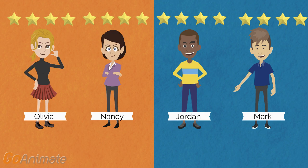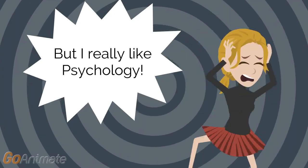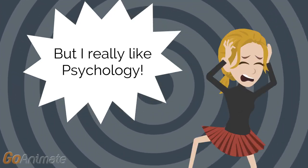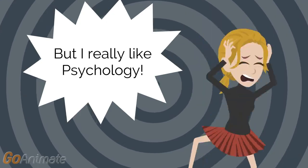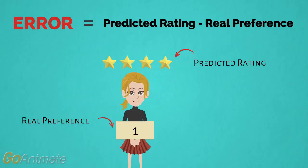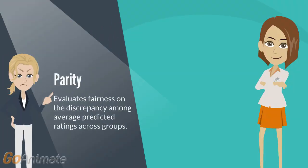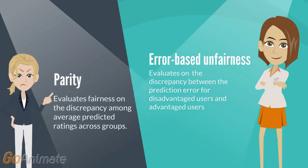For example, Olivia may be recommended computer science classes when she'd rather have a career in psychology. So we propose another type of fairness evaluation based on the prediction error. To respect individual and group differences, our goal is to treat everyone equally well, since forcing everyone to be equal is not desirable.